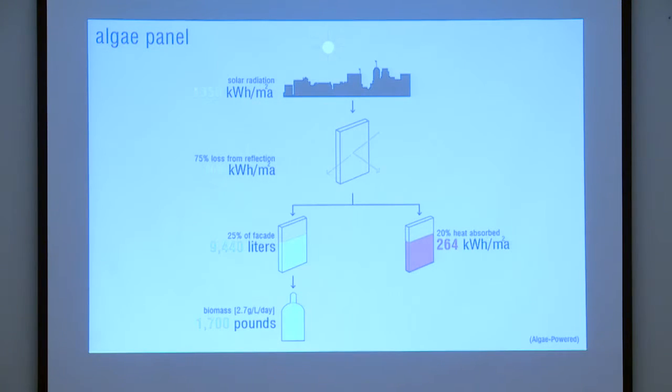Over here, you can see some of our calculations. By having this system and implementing it nine months out of the year, it would yield 1,700 pounds of directly combustible biomass.